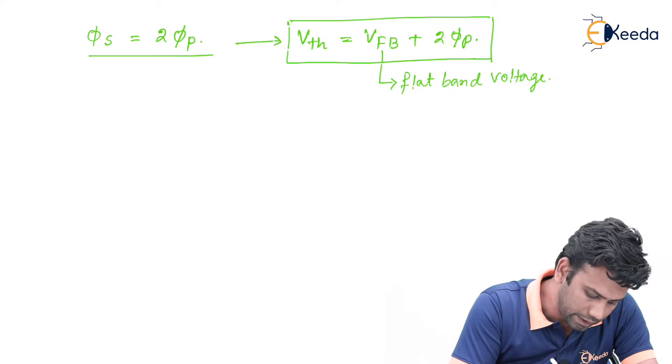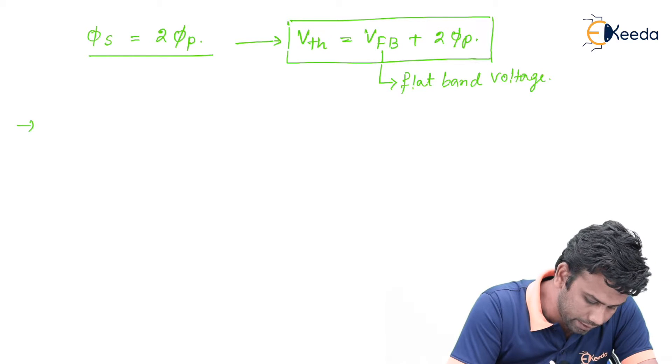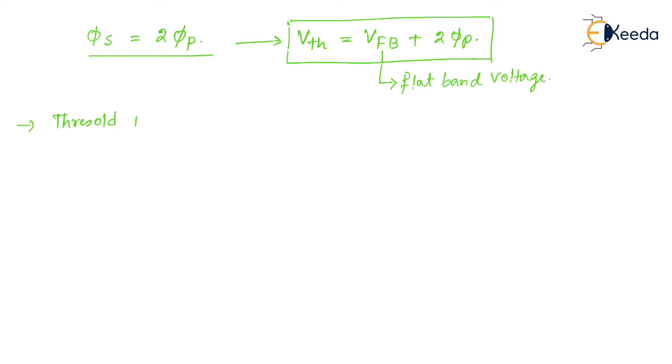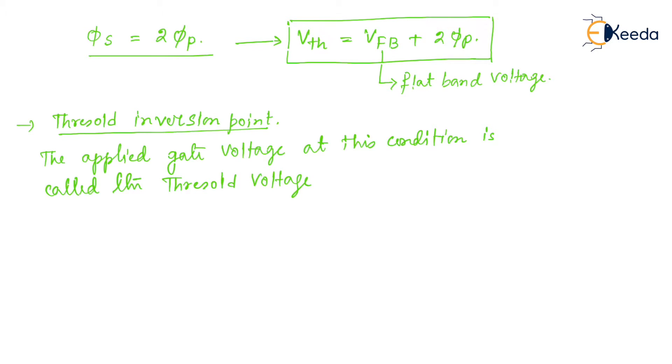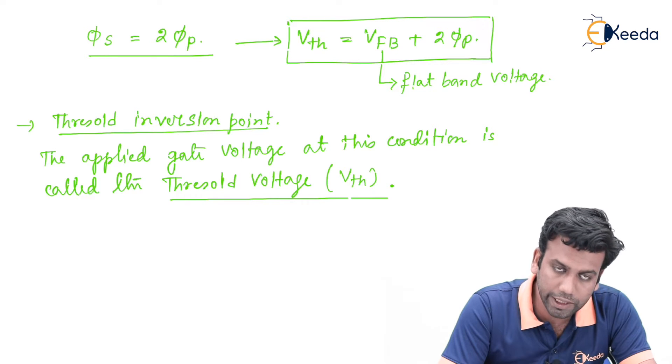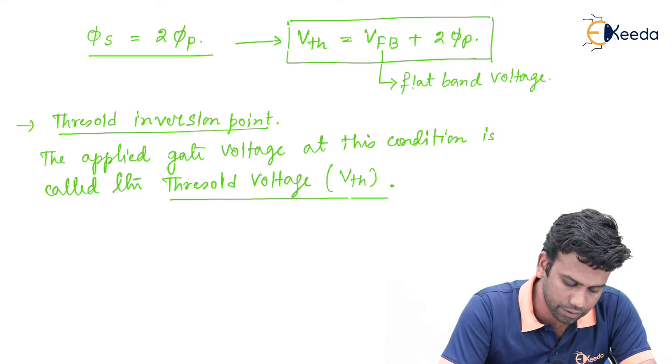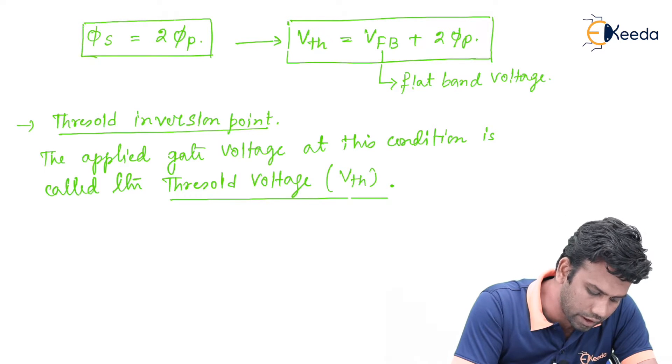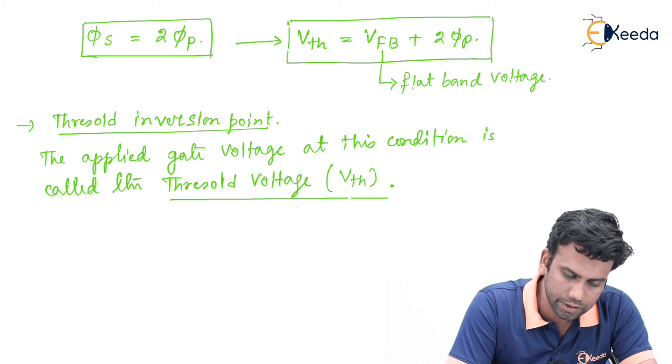This condition is known as the threshold inversion point, and the applied gate voltage at this condition is called the threshold voltage. The voltage for which the threshold inversion point just occurs is called the threshold voltage of the MOS capacitor.